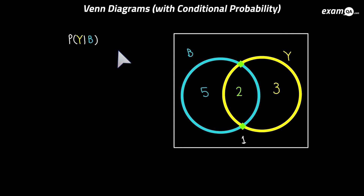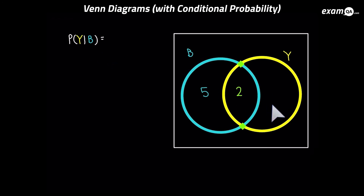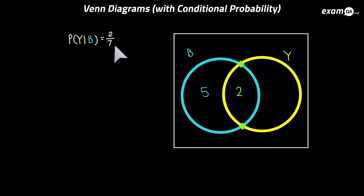Let's try another one: the probability of Y given B. We need to work out the probability of Y given that B has definitely happened. So there's no point looking at anything outside B. From the remaining numbers, only 2 is the Y we're looking for — 2 over the total. The total is not 11 because other numbers are gone; it's just 7. So it's 2 over 7.